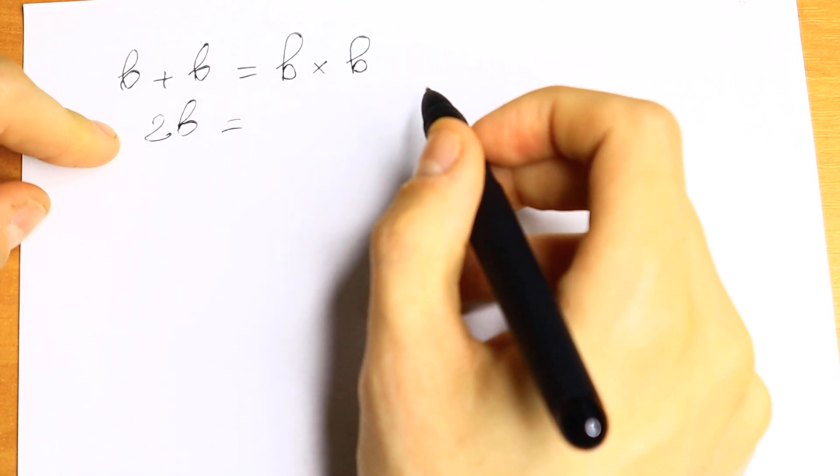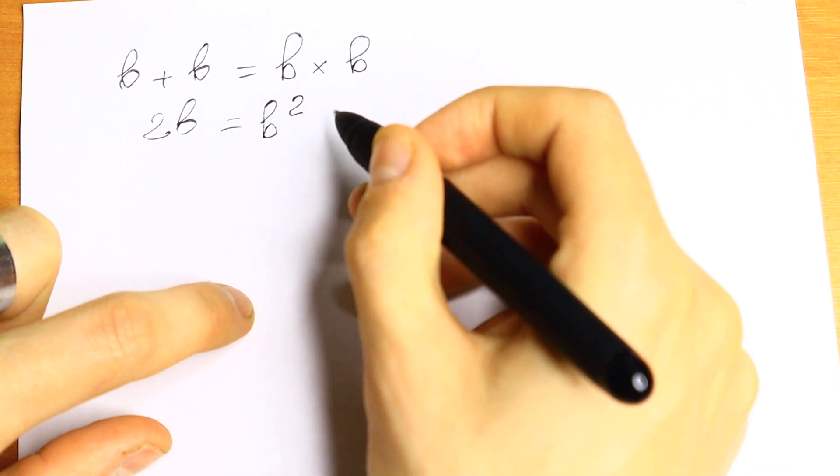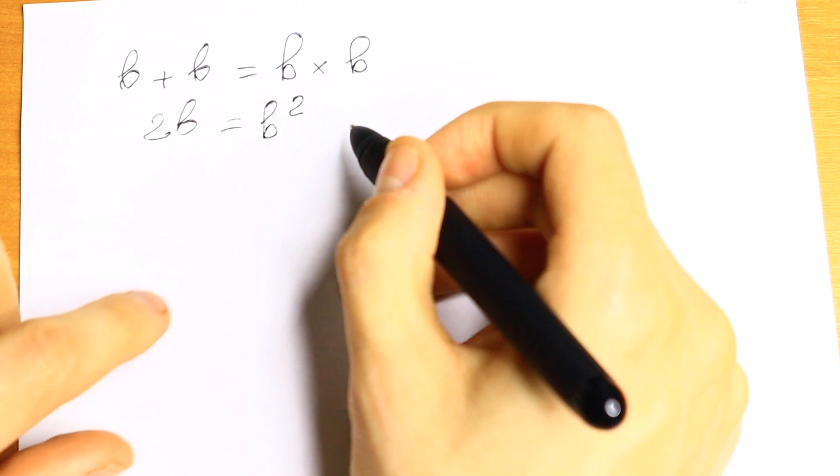On the right we have b times b. We all know that it will be equal to b squared. So we have an equation 2b equal to b squared.